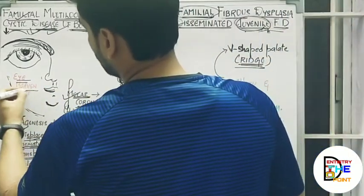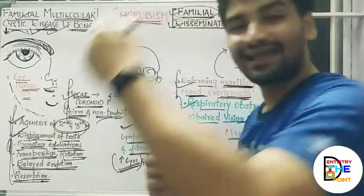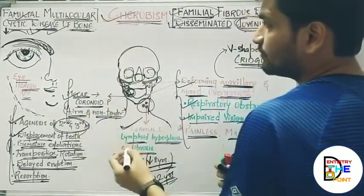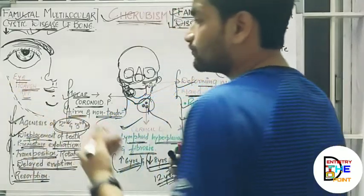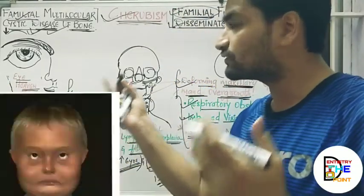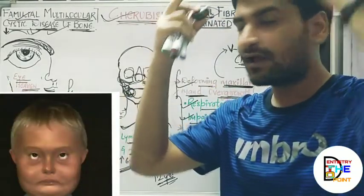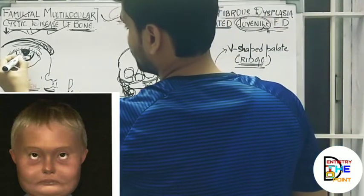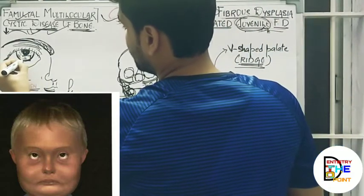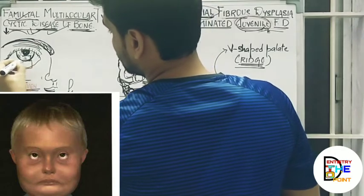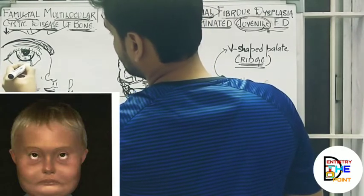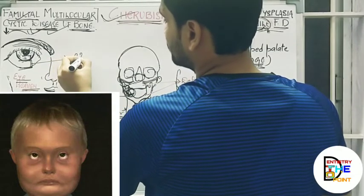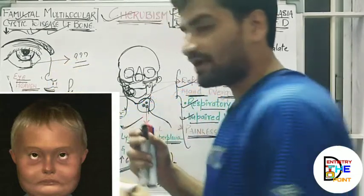One more feature commonly asked in exam questions is the 'eye looking towards heaven' appearance, seen in cherubism. It appears as if the patient is looking upward — there will be a space seen between the iris and the sclera, known as the 'eye looking towards heaven' appearance.